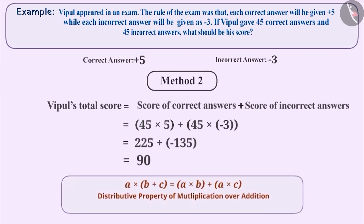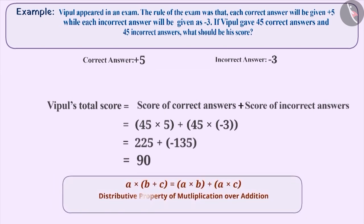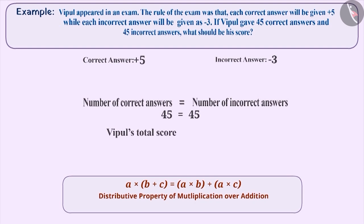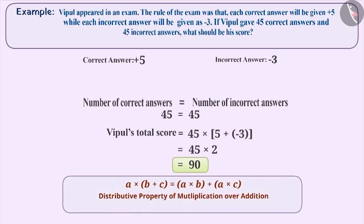We can solve this in an easier way using the distributive property of multiplication over addition. Since the number of correct and incorrect answers is equal, we can say Vipul's total score equals 45 multiplied by (5 plus minus 3), which equals 45 multiplied by 2, which equals 90. By using the distributive property, we can easily find the result in such situations.